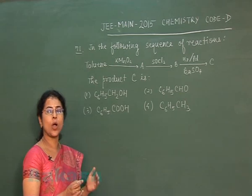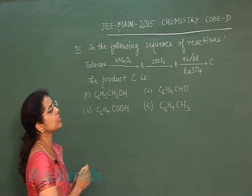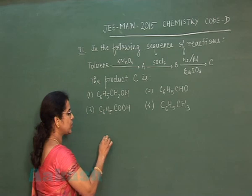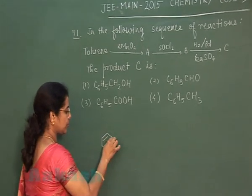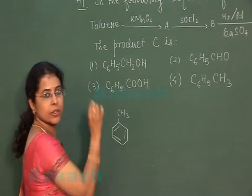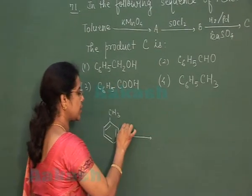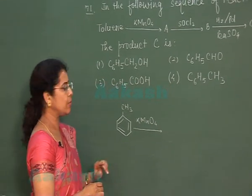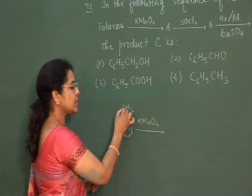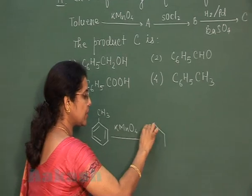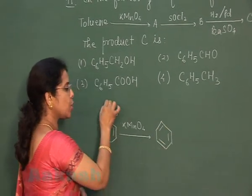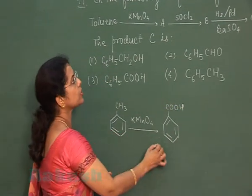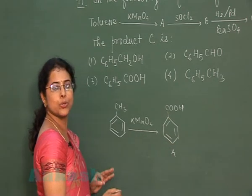To identify product C, we solve this equation step by step. The first compound is toluene, which is methyl benzene. Its reaction with KMnO4 — since toluene has benzylic hydrogen atoms, when any such compound reacts with KMnO4, the whole alkyl group is oxidized to a carboxylic acid. So product A is benzoic acid.